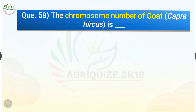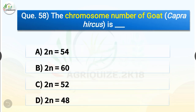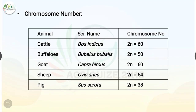Question number 58. The chromosome number of goat (Capra hircus) is dash. The options are 2n=54, 2n=60, 2n=52 or 2n=48. The correct answer is option B, 2n=60. So the chromosome number of goat is 2n=60. In cattle (Bos indicus) 2n=60; in buffalo (Bubalus bubalis) 2n=50; in goat (Capra hircus) 2n=60; in sheep (Ovis aries) 2n=54; and in pig (Sus scrofa) 2n=38.